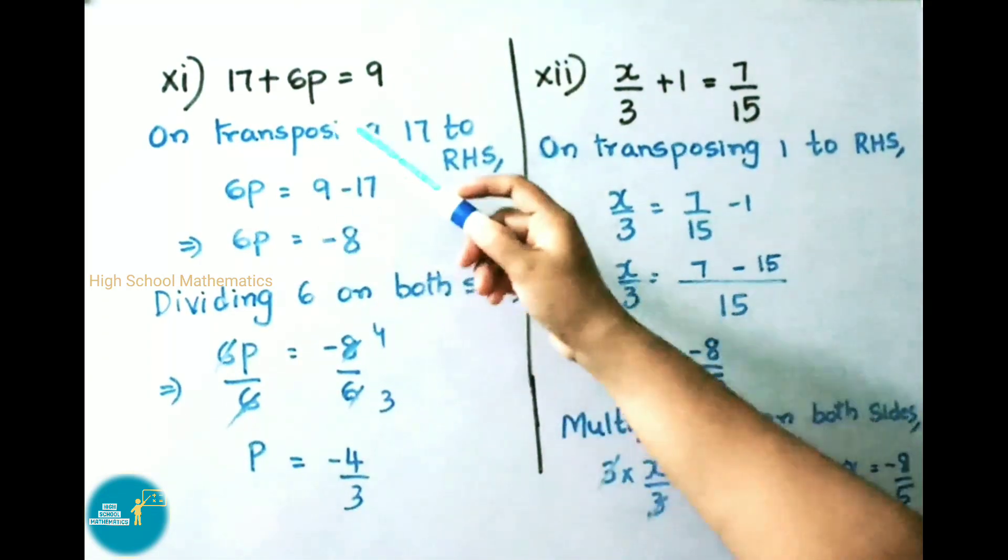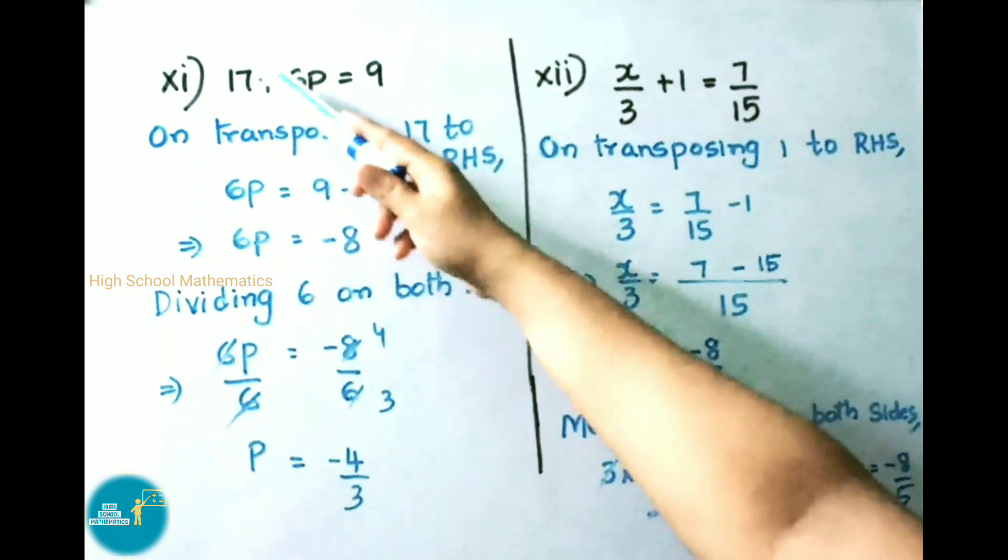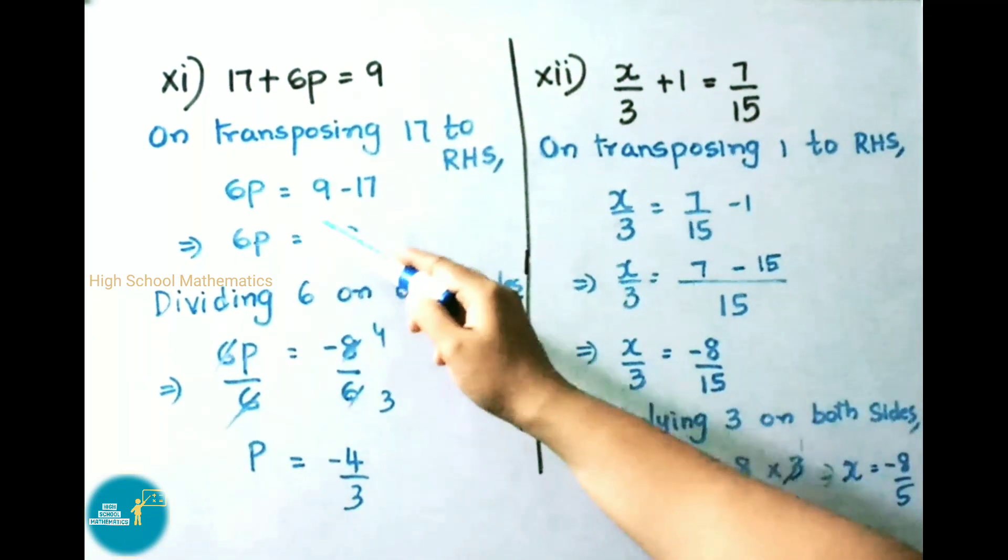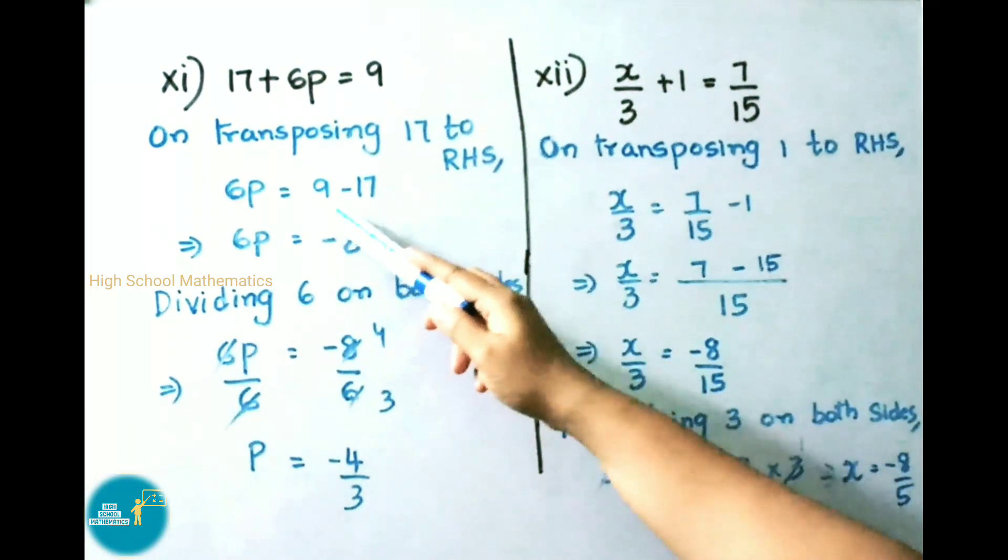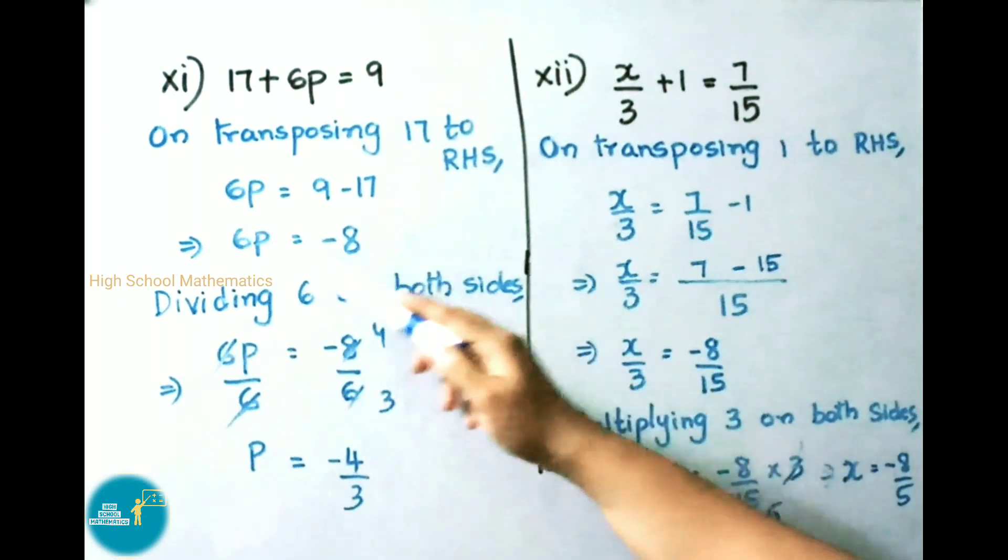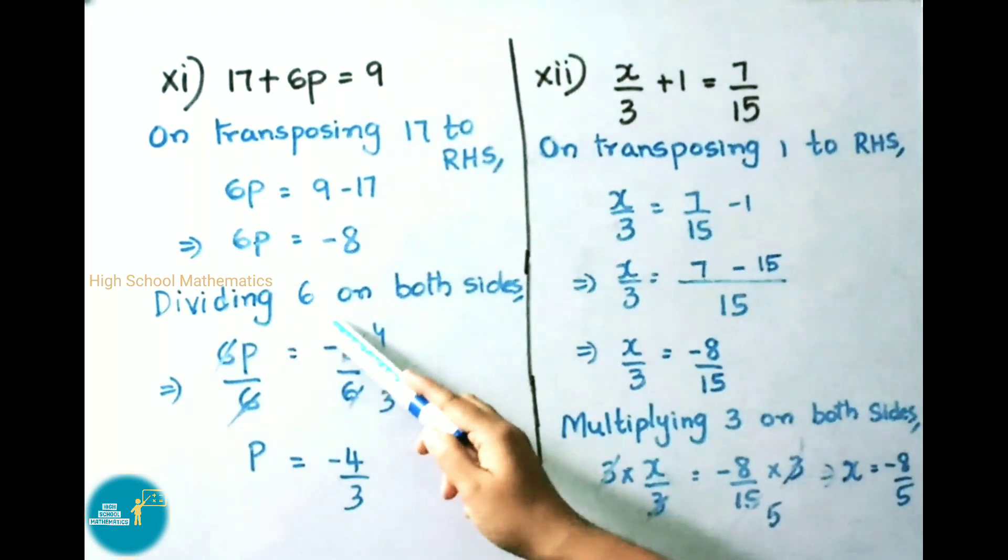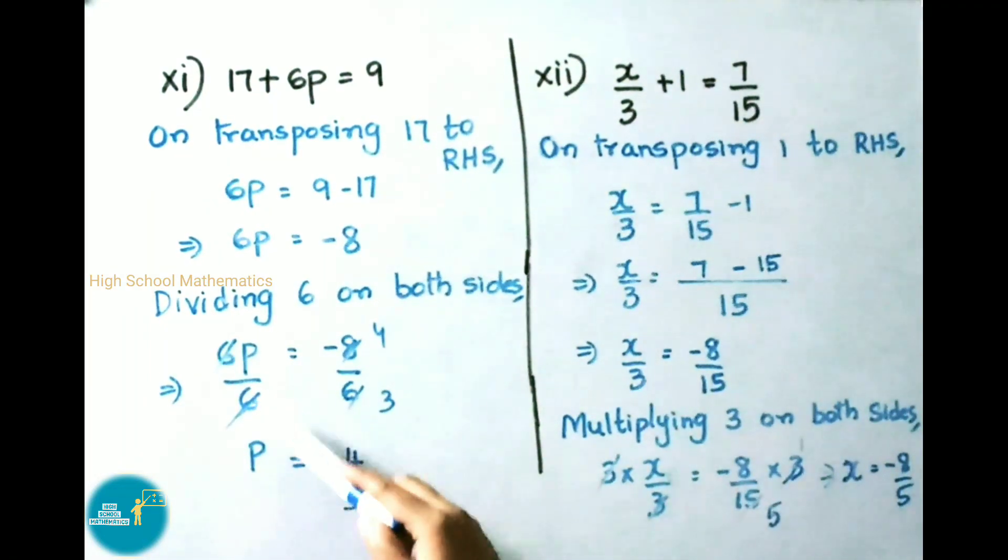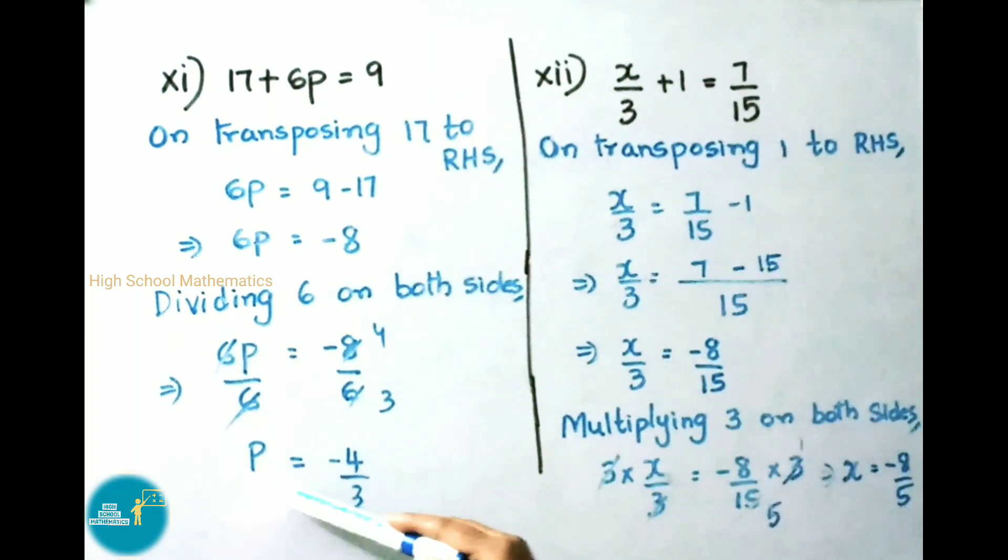Now question 11: 17 + 6p = 9. We have to remove this 17. On transposing 17 to RHS, 6p = 9. Plus 17 becomes minus 17. So 9 - 17 = -8. That implies 6p = -8. To remove this 6, we divide 6 on both sides. 6p/6 = -8/6. Here 6 and 6 cancel. 2 × 4 = 8, 2 × 3 = 6. So p = -4/3.